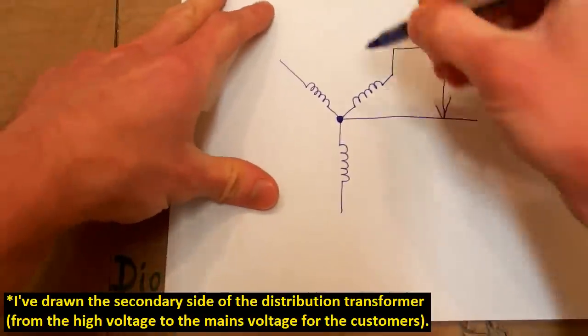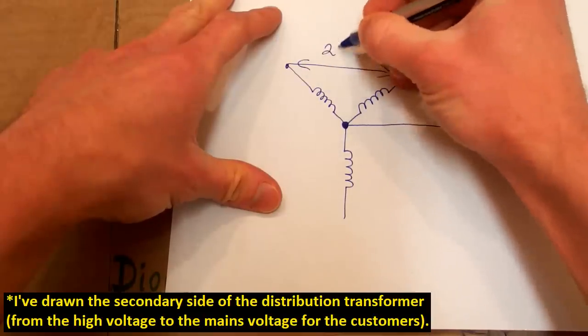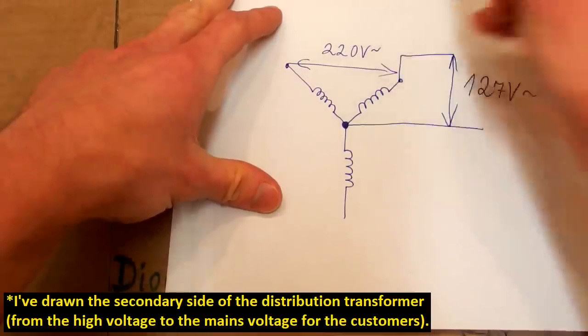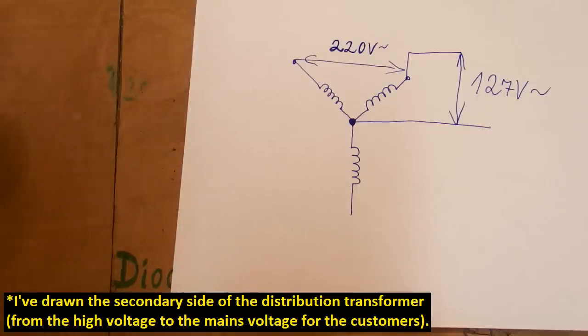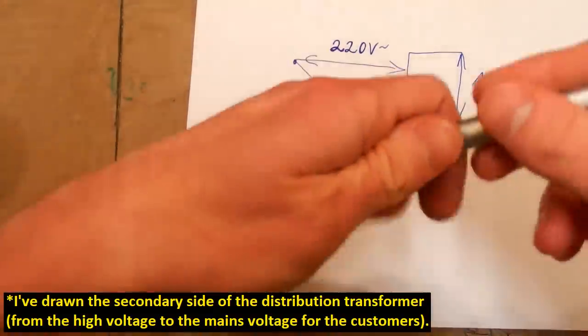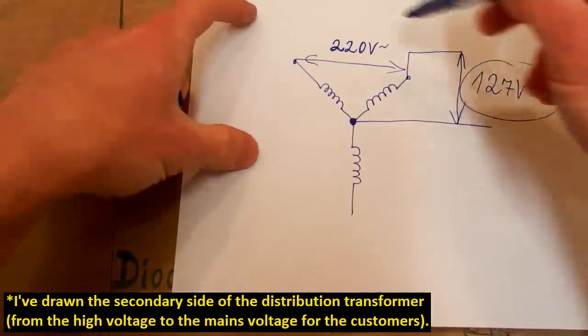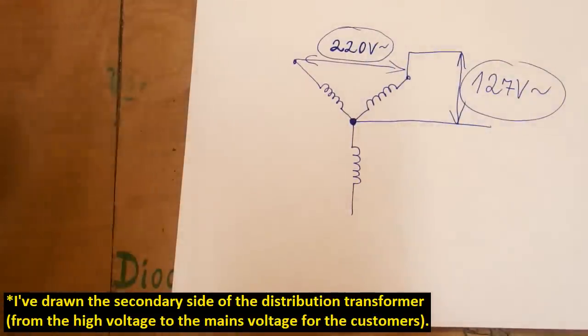And the voltage from one phase was 220 volts. Tell me if I'm wrong but I guess that the transformer from the high voltage to the low voltage for customers was like this. So you could have appliances for 127 volts or 220 volts.